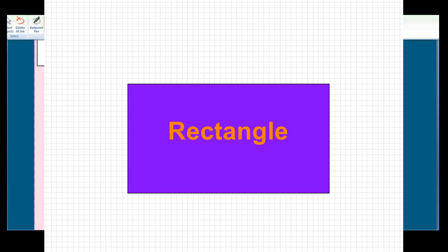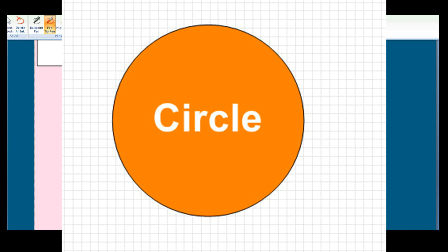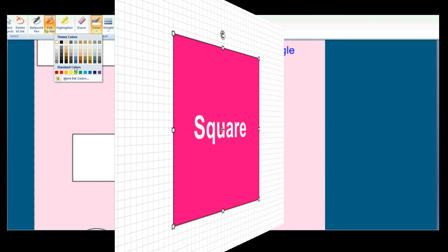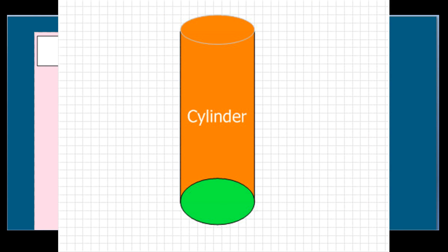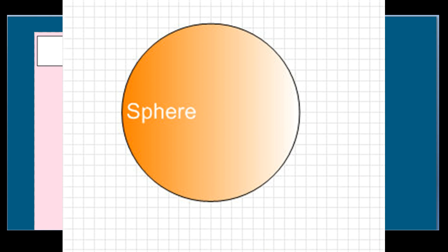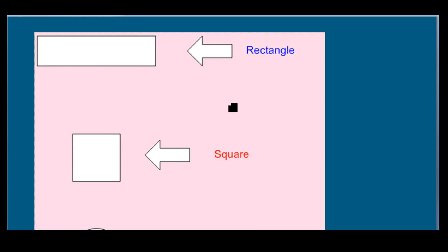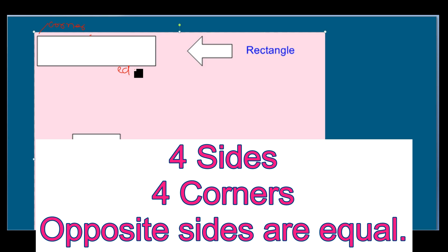We have heard many times about a rectangle, circle, and other objects like square, cone, cylinder, triangle, and sphere. I am going to clarify your idea about these objects. This one is the rectangle — it has four sides, and a rectangle has four corners. These are called corners, and these are called edges.